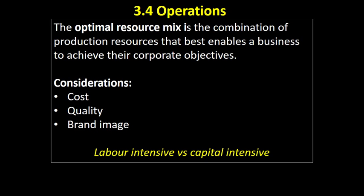The sort of things we might consider: what's the cost of installing new machinery or building a new plant, what will be the impact on the quality of our product, and what's our brand image. There will be a choice to a certain extent between whether the business spends the majority of its production costs on human inputs — on labour — or on machinery, on capital.